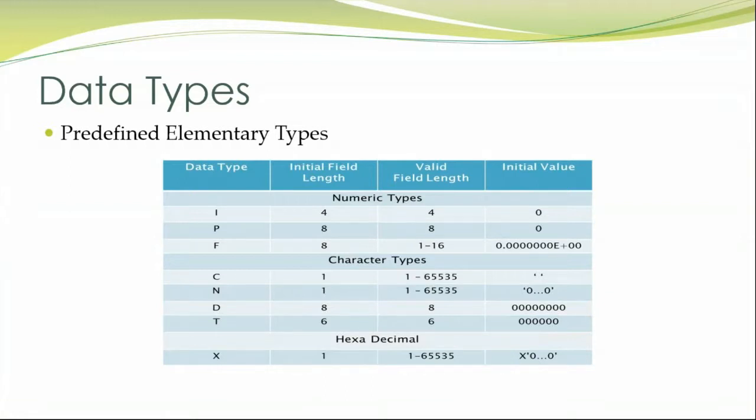D stands for date, which is 8 digits, maximum digits is 8. The usual format of date is DDMMYYYY. The next data type is time, denoted by T, whose initial field length is 6 and the maximum field length is 6, which is denoted by SSMMHH.